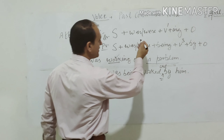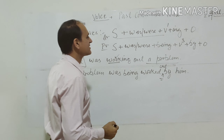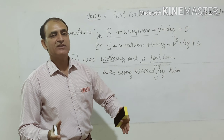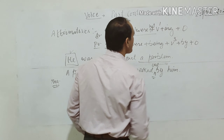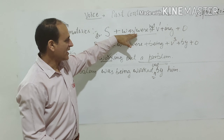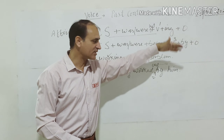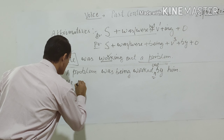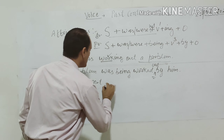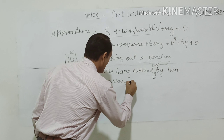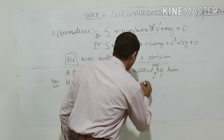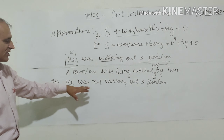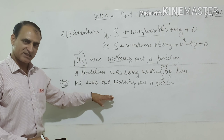Now let's make the negative of the same sentence. In a negative sentence, 'not' comes between the helping verb and the main verb. So the negative active sentence becomes: 'He was not working out a problem.' Now we change this into passive voice.